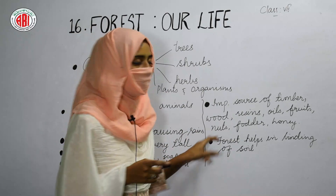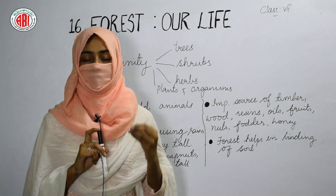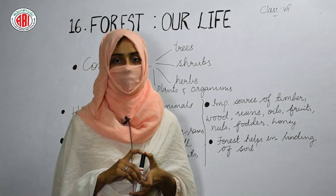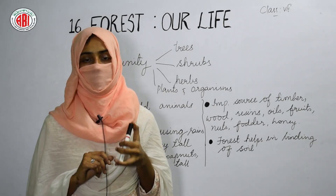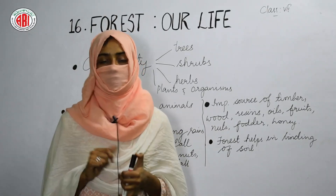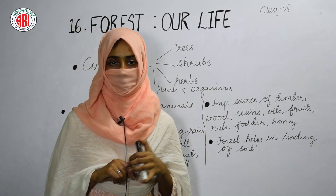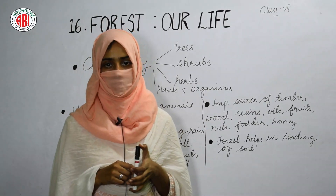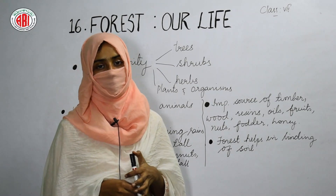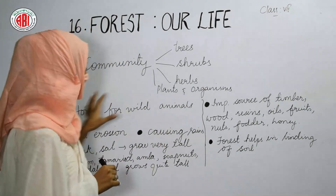The forest also helps in binding of soil, which prevents soil erosion so the topmost fertile layer is not washed away by wind or water. When soil erosion is prevented, the soil remains fertile, provides nutrients and minerals to plants, and more trees can grow in the forest.